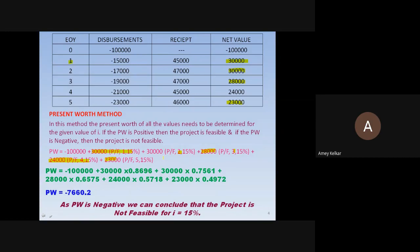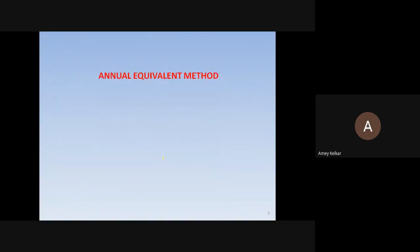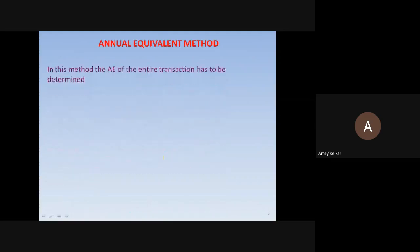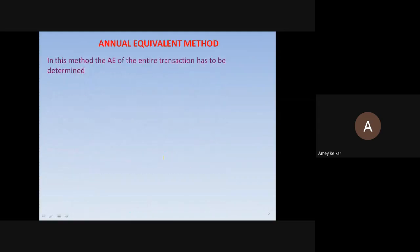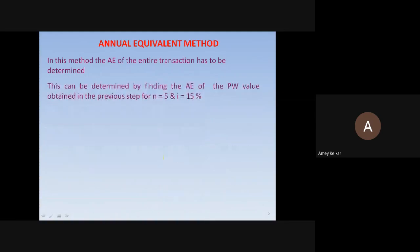The next part is the annual equivalent method. In this method, the annual equivalent of the entire transaction has to be determined. This can be done by finding the annual equivalent of the present worth value obtained in the previous step.